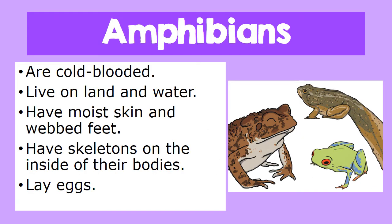The first group of vertebrates are the amphibians. Amphibians are cold-blooded. They live on land and water, have moist skins and webbed feet, have skeletons on the inside of their bodies, and they lay eggs.